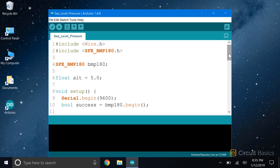The sketch for finding your sea level pressure is very similar to the altitude sketch. There are just a few differences. Here we declare a float variable called ALT, which holds the altitude of your location in meters. This is where you put the altitude measurement you got online or from your phone app.